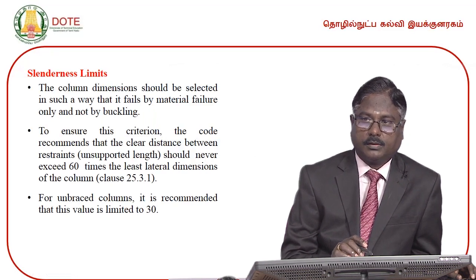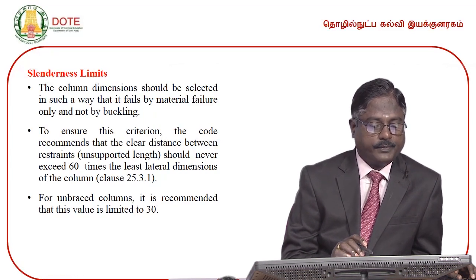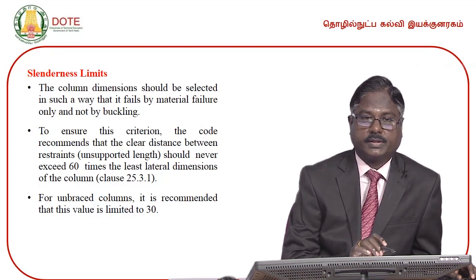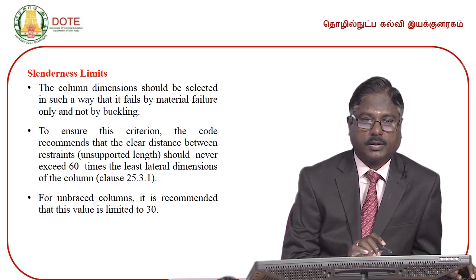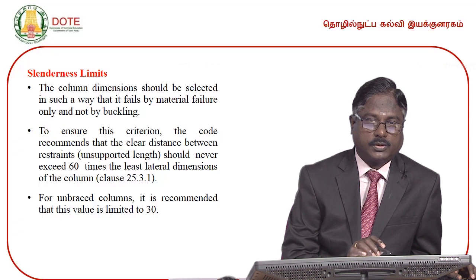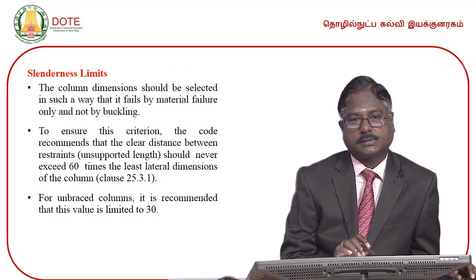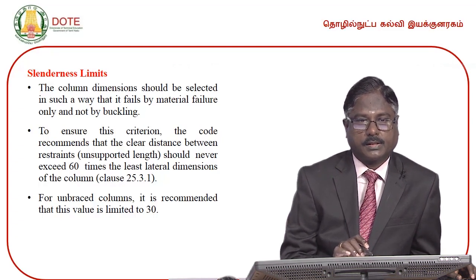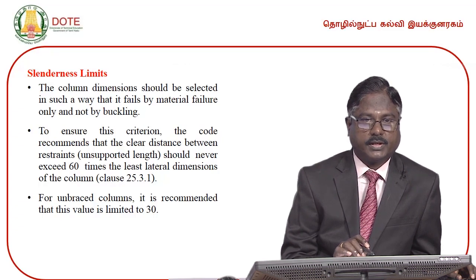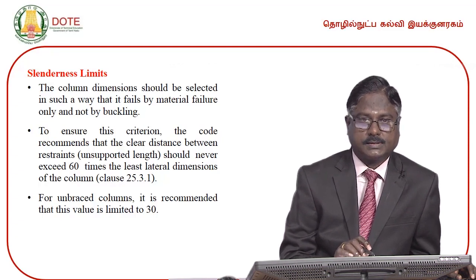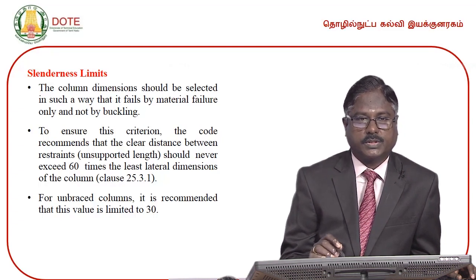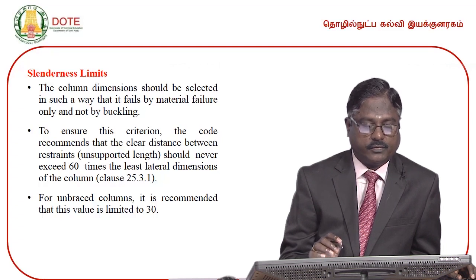Another important criterion is the slenderness limit. The column dimensions should be selected such that failure occurs by material failure only and not by buckling. To ensure this, slenderness limits are important. The code recommends that the unsupported length should never exceed 60 times the least lateral dimension of the column.